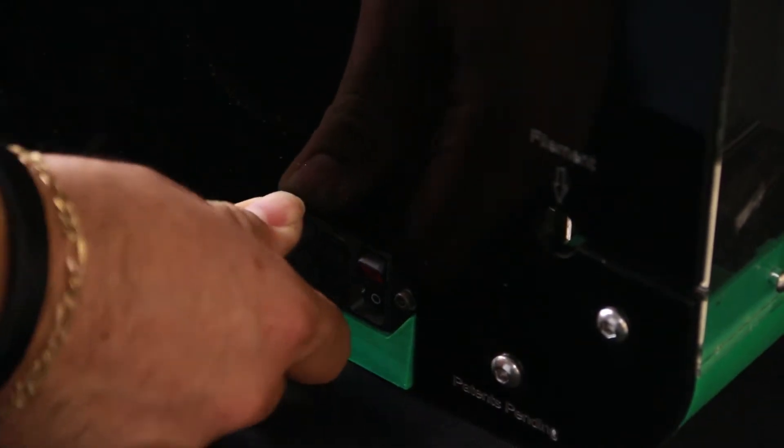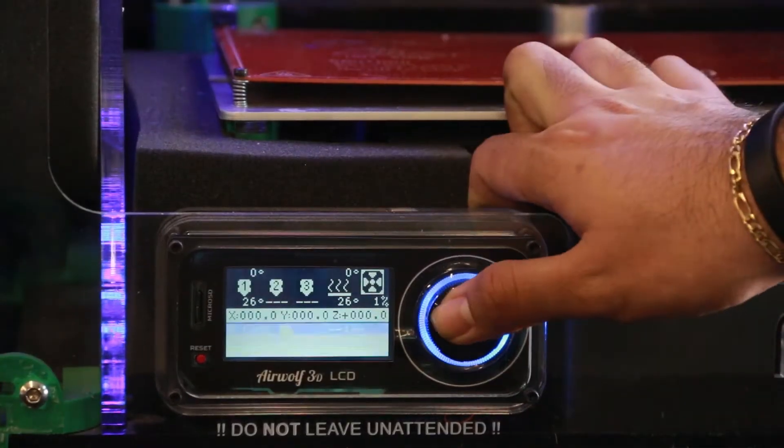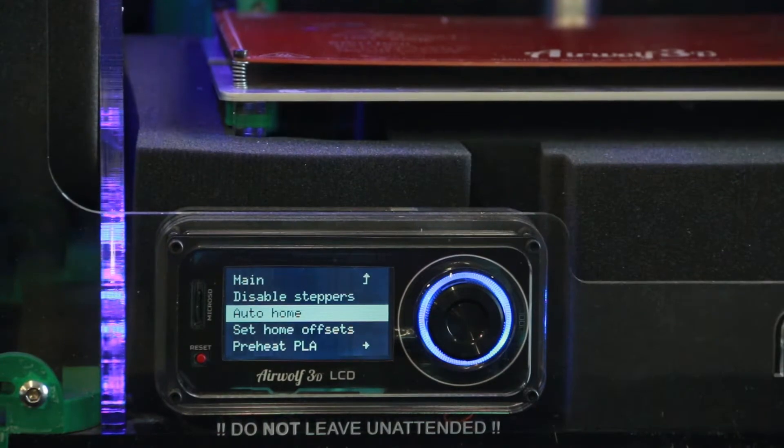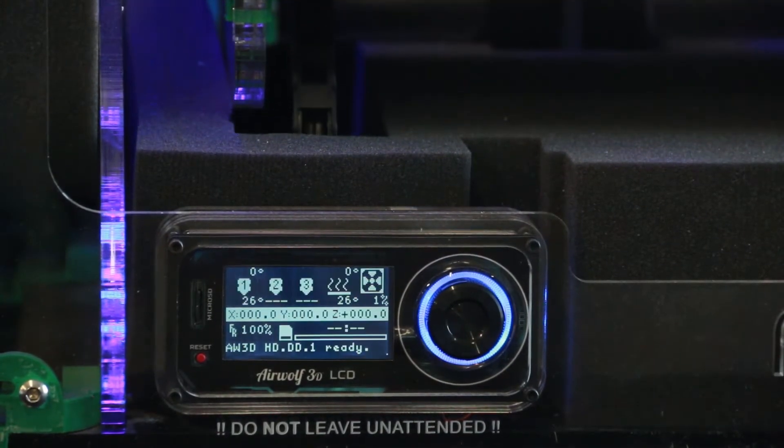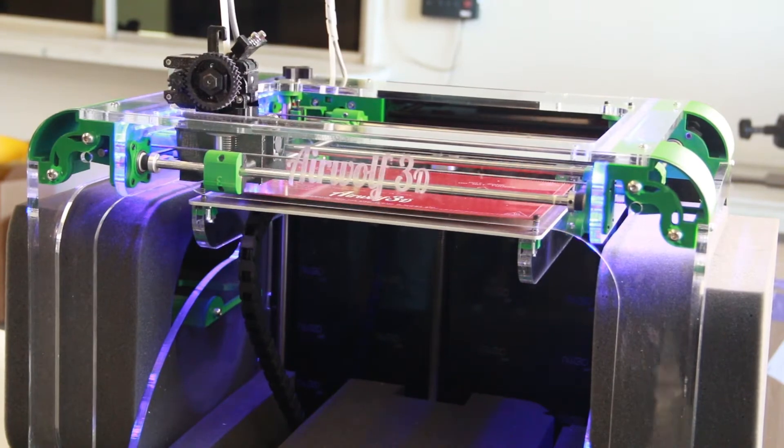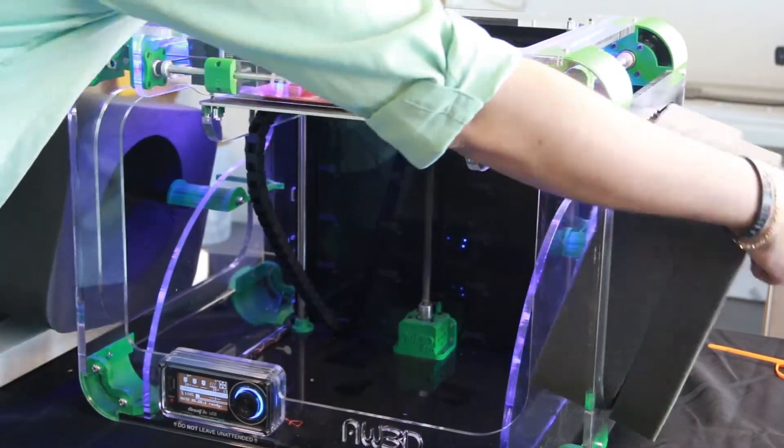Plug your printer in and turn it on. Using the LCD screen, navigate to the auto home command. The bed assembly will move up and you will be able to remove the bottom pieces of the foam. Finish removing the foam by taking the side foam off.